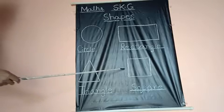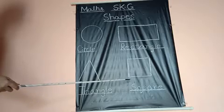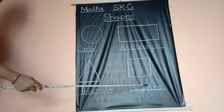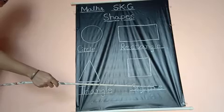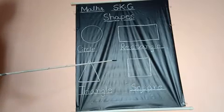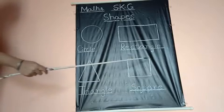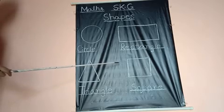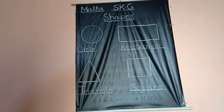And last is square. S-Q-U-A-R-E. Square. It has four corners. It is always the same. Thank you students.